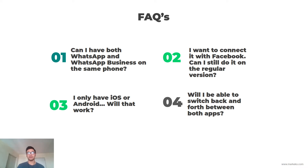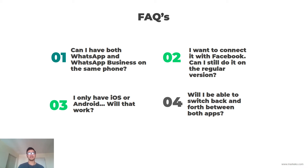Number two: I want to connect it with Facebook — can I still do it on the regular version? Yes you can. You can have a personal WhatsApp number and connect it to your Facebook fan page, but I don't really get why you would do that knowing that WhatsApp Business has several tools for you to use. But yes, you can — it is a possibility.